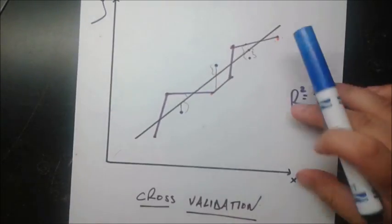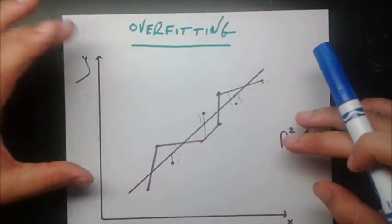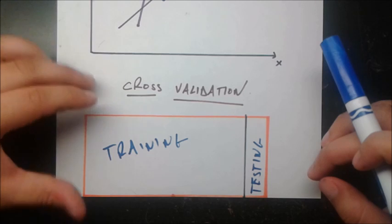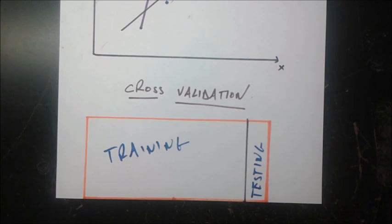Basically, that's just a short video on overfitting, which is a big problem, and how you can avoid it using different types of cross-validation.